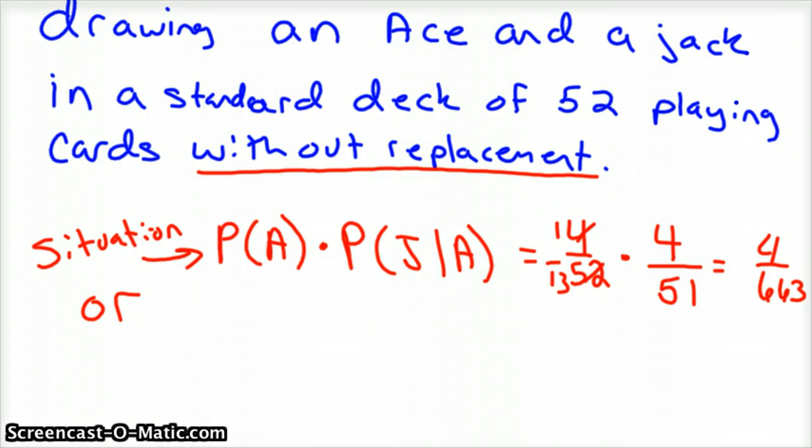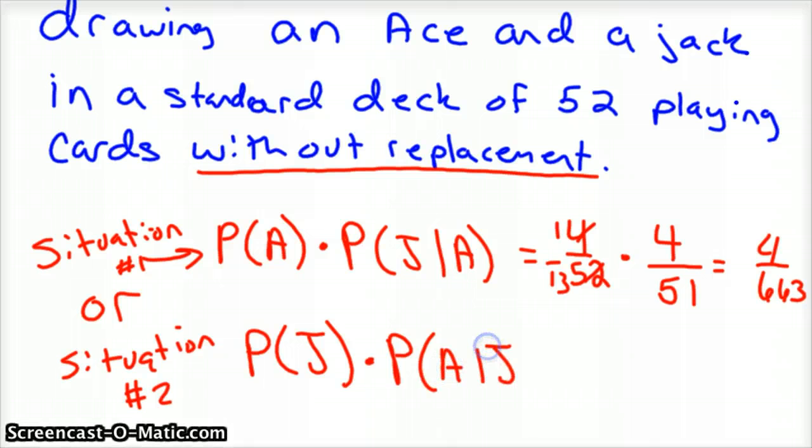Or, we could have situation 2, where we could have gotten the jack first and the ace second. So that would be the probability of a jack times the probability of an ace the second time given that a jack has been dealt. So, that one again, probability of a jack is going to be the same thing. 4 out of 52 for a jack. There's 4 jacks and 52 cards. But we've taken a jack away. And now we're going to draw out an ace. And there's still 4 aces. We haven't lost any aces. But there's only 51 cards left. And so again, you could reduce that ahead of time. So that's 1 in 13. And it's exactly the same thing. 4 out of 663.